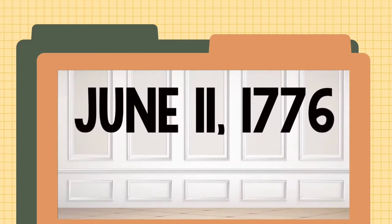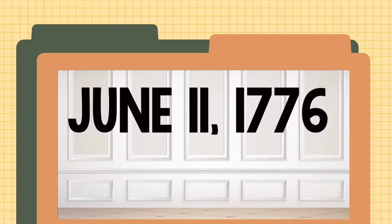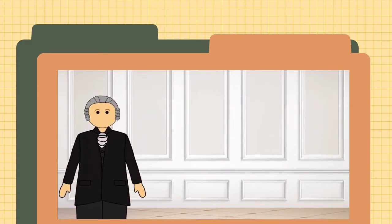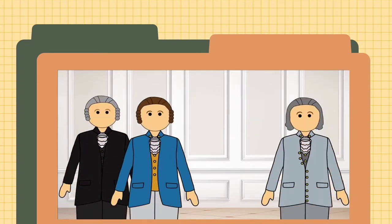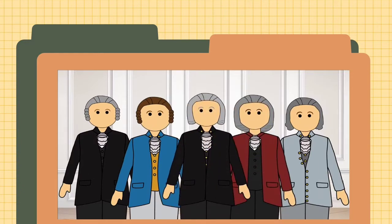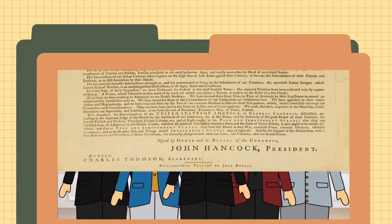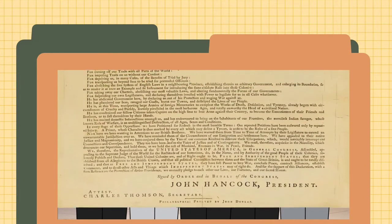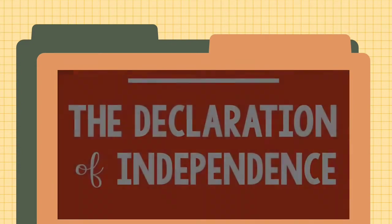On June 11, 1776, a committee of five men were chosen to draft the ultimate breakup letter: John Adams, Benjamin Franklin, Roger Sherman, Thomas Jefferson, and Robert Livingston. Over the course of 17 days, a document was penned that would impact the lives of generations of people — the Declaration of Independence.